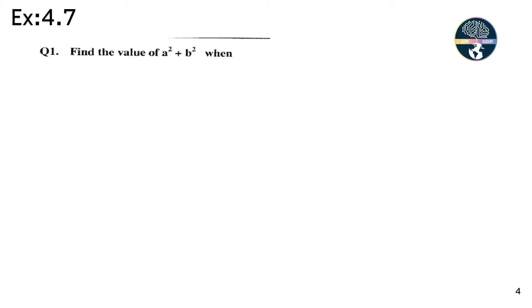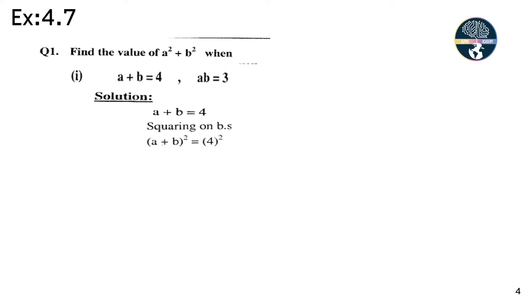Exercise 4.7, Question No. 1: Find the value of a² + b² when a + b = 4 and ab = 3. Solution: squaring on both sides, (a + b)² = 4², so a² + 2ab + b² = 16.